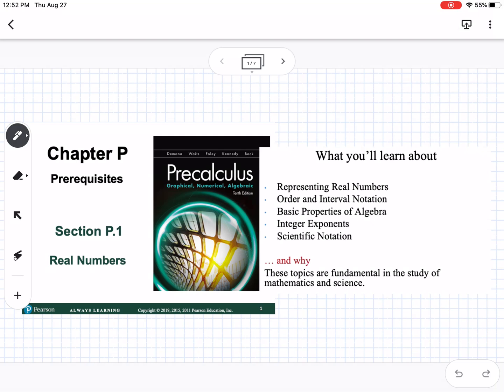This is chapter P, section P.1, which is about real numbers. You can see the things you're learning: representing real numbers, order and interval notation, basic properties of algebra, integer exponents, and scientific notation. These are all things you'll use throughout the other chapters, so it's just a recap. These are all things you've learned before.